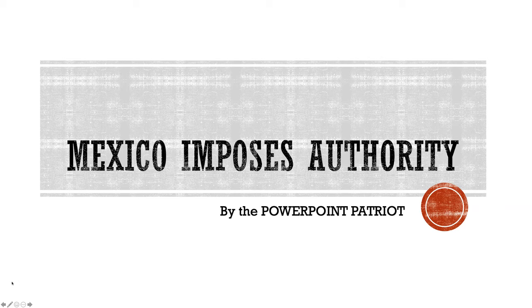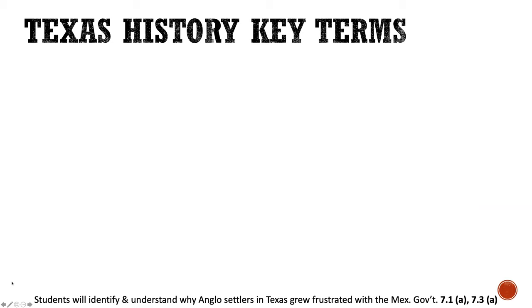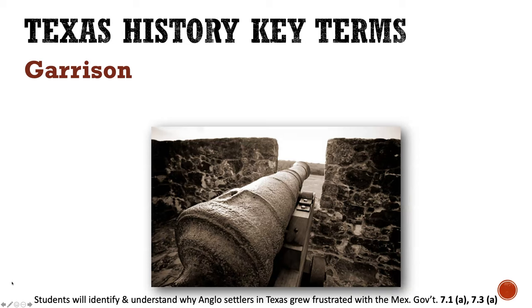What we're going to do today is talk about how Mexico noticed these issues and what they did to slow it down or try to stop the Americans from being too quote-unquote American. First, we have our Texas history key terms, which you should have already filled out in your unit five key terms packet. Our first key term is the term garrison.